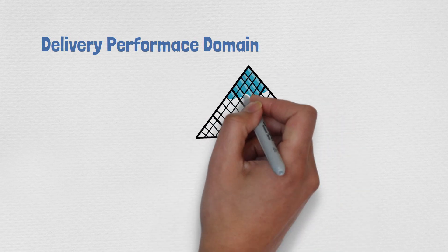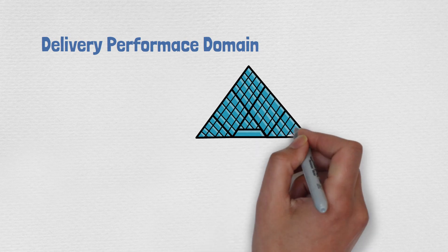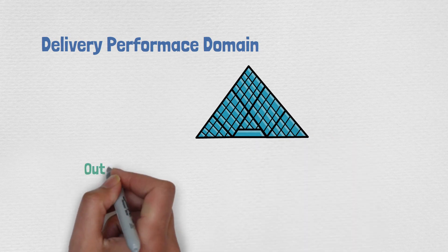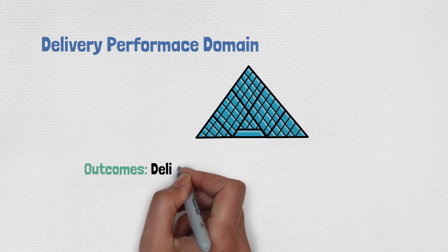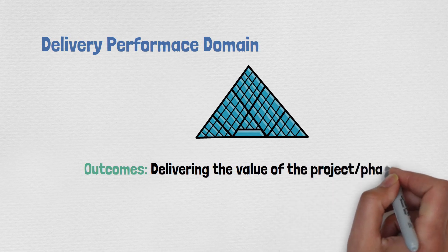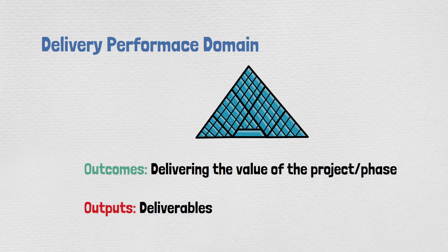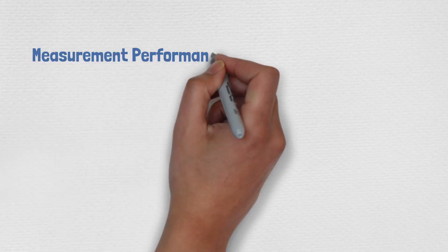The Delivery performance domain addresses the activities and functions associated with delivering the scope and quality that the project was undertaken to achieve. Delivering the value of the project is the main outcome. The outputs in PMBOK 6 were all about the deliverables handed out to the customer.